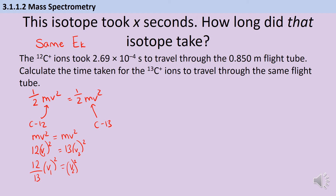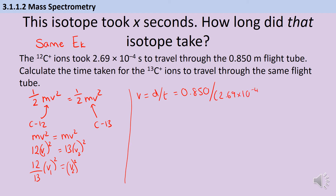So now I need to know what the velocity of my carbon-12 isotope actually is. Velocity is distance divided by time, so that's 0.850 metres divided by 2.69 × 10⁻⁴ seconds, which gives me a velocity for my carbon-12 isotope of 3,160 metres per second. I'd obviously use the full calculator display, but there's no sense in writing it all down.